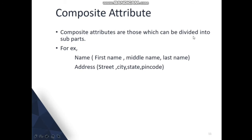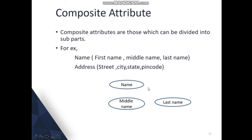A composite attribute is divided into sub parts. For example, the attribute 'name' can be divided into first name, middle name, and last name. Similarly, 'address' can be divided into street, city, state, and pin code. These sub parts are connected to the main attribute by a line, and this kind of attribute is known as a composite attribute.